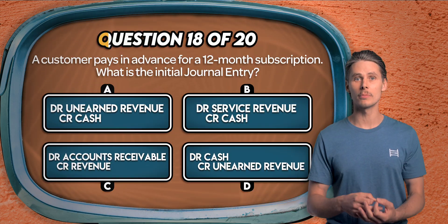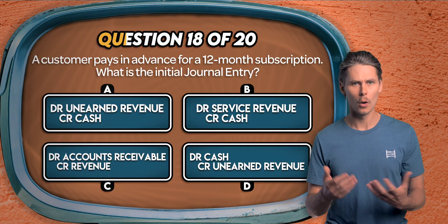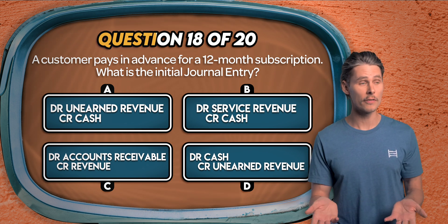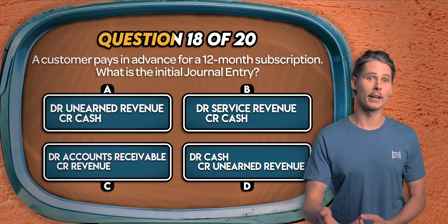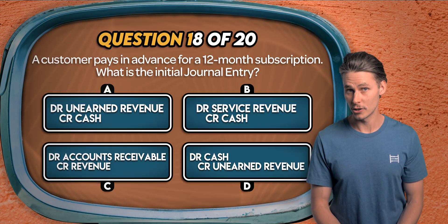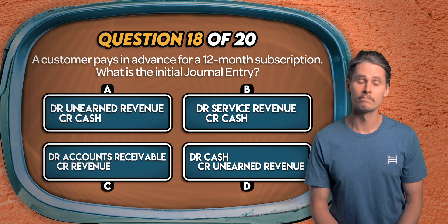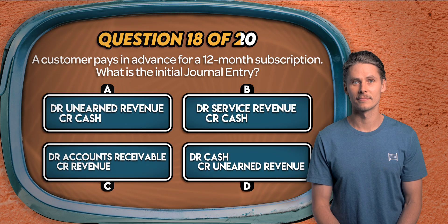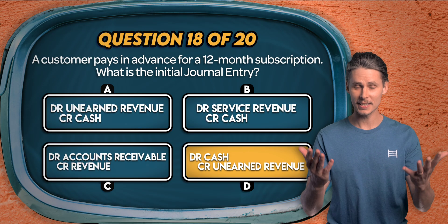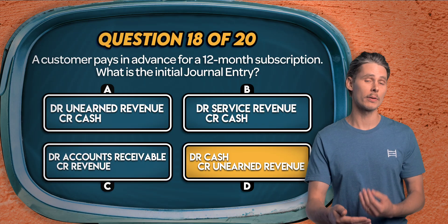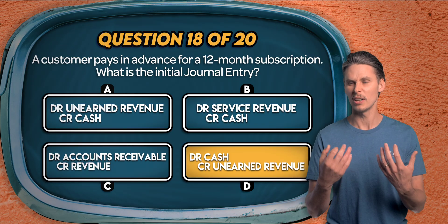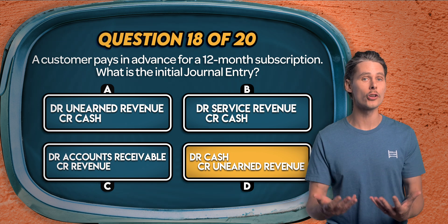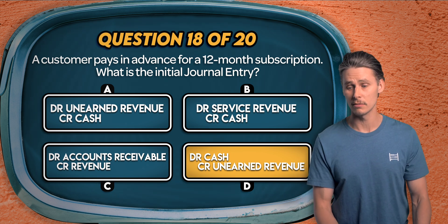Question 18. A customer pays in advance for a 12-month subscription. What is the initial journal entry? Is it debit unearned revenue credit cash, debit service revenue credit cash, debit accounts receivable credit revenue, or debit cash credit unearned revenue? It's D. When a customer pays for a subscription in advance, the business receives cash now but hasn't earned the revenue yet. So we debit cash to increase it and credit unearned or deferred revenue to record a liability on the balance sheet.